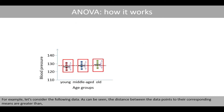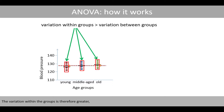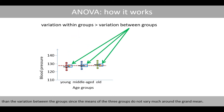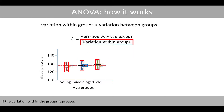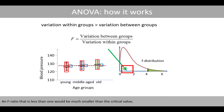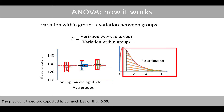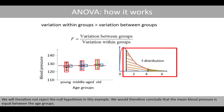For example, let's consider the following data. As can be seen, the distance between the data points and their corresponding means are greater than the distance between the group means and the grand mean. The variation within the groups is therefore greater than the variation between the groups, since the means of the three groups do not vary much around the grand mean. If the variation within the groups is greater than the variation between the groups, then the F-ratio will be less than 1. An F-ratio that is less than 1 would be much smaller than the critical value, which is 4.26 in this example, since this is the value that defines 5% of the tail in an F-distribution with 2 and 9 degrees of freedom. We will discuss the degrees of freedom of the ANOVA in the next lecture. The p-value is therefore expected to be much bigger than 0.05, and we will therefore not reject the null hypothesis in this example. We will therefore conclude that the mean blood pressure is equal within the age groups.